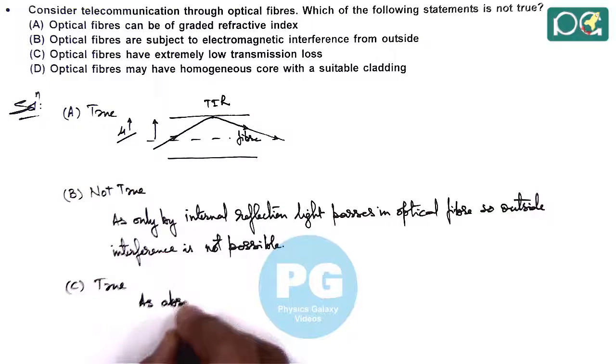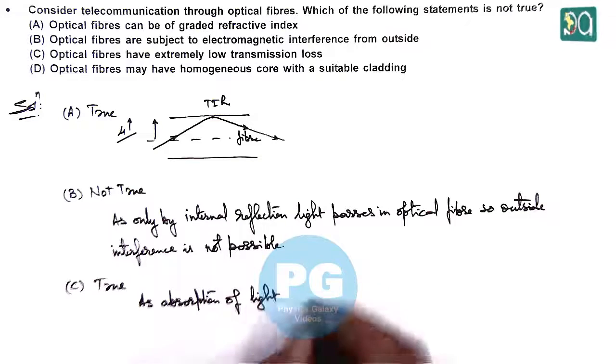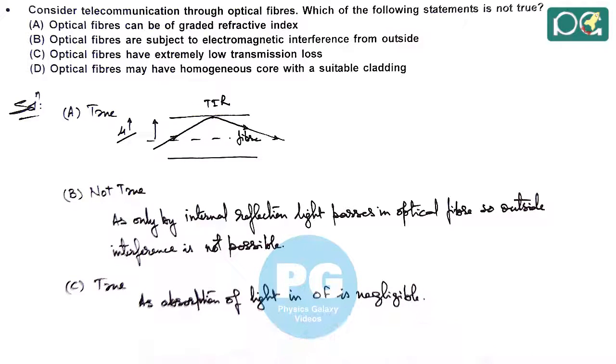As absorption of light in optical fiber is negligible. So transmission losses are not there.